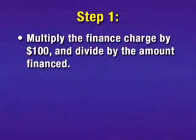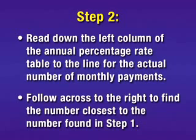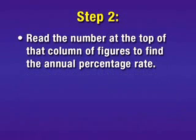Now let's find the APR using the table. In order to find the APR using the table: step one, we multiply the finance charge by $100 and divide by the amount financed. Step two, we read down the left column of the annual percentage rate table to the line for the actual number of monthly payments, then follow across to the right to find the number closest to the number found in step one. Read the number at the top of that column to find the annual percentage rate.